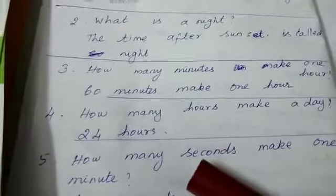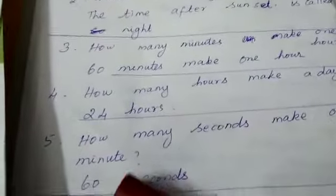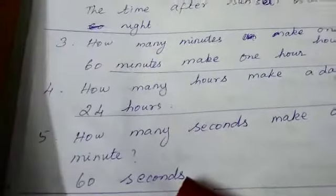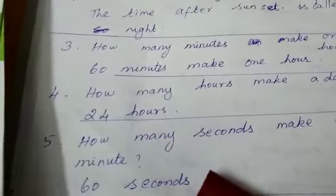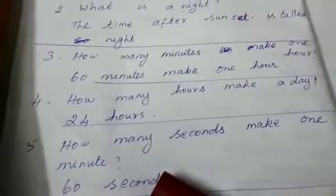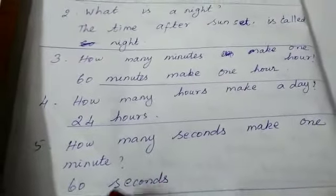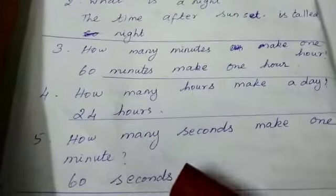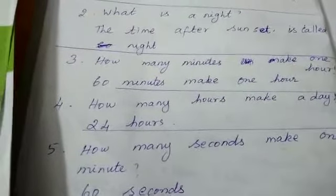How many seconds make one minute? 60 seconds. How many seconds make one minute? 60 seconds, S-E-C-O-N-D-S, seconds, 60 seconds.